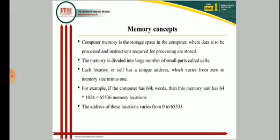Computer memory is the space for storage in the computer where data can be processed, instructions can be processed and stored. It can be divided into a large number of small units called cells, and the location of a cell can be defined as a unique address that varies from 0 to 1 less than the memory size.